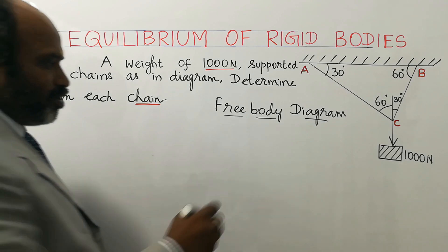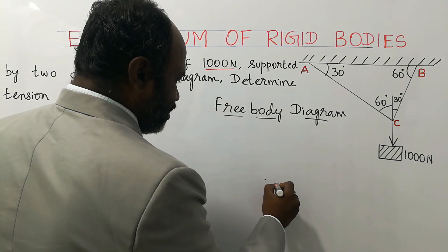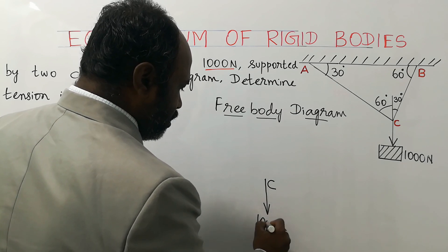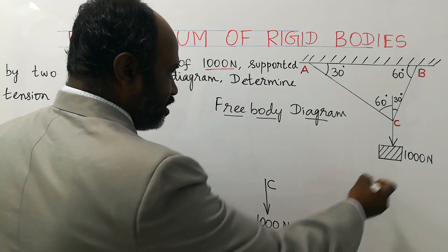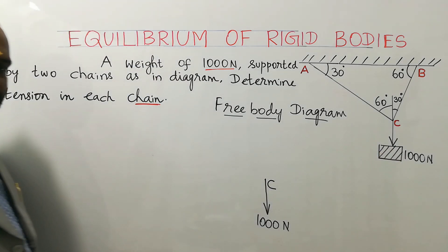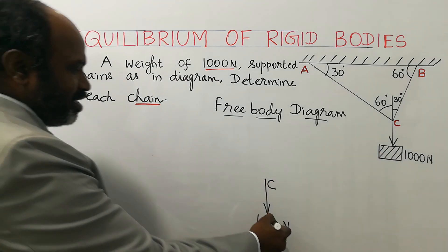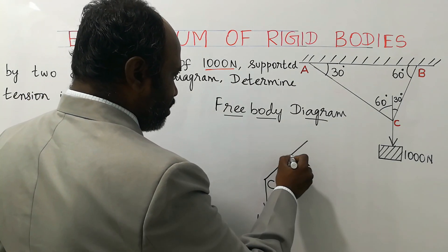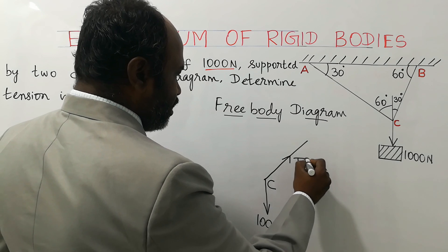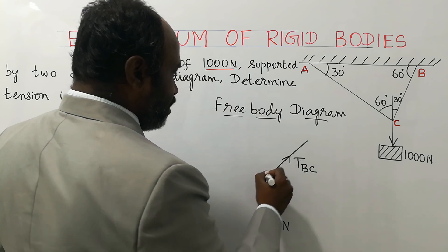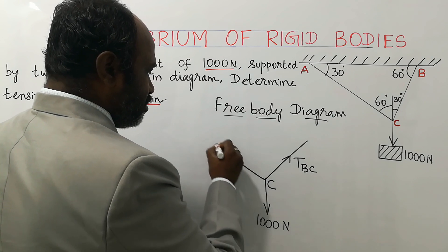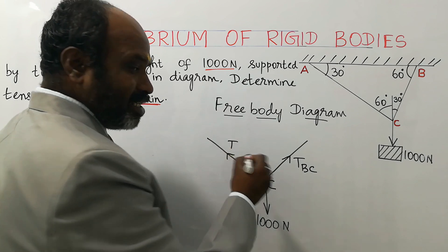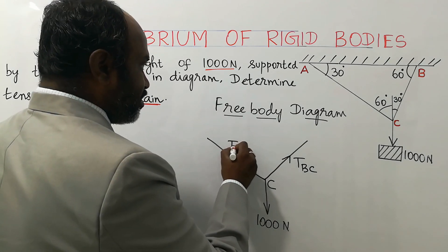At point C we are going to consider the forces. This is point C, and the force acting downwards is 1000 Newton. This is the load or suspended weight of 1000 Newton acting downwards from point C. This is the tension in the string T_BC — tension in string BC. And another string carries tension T_AC — tension in string AC.